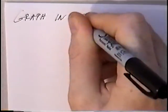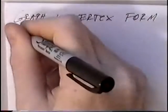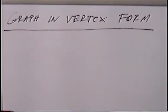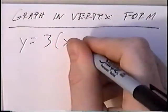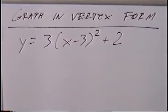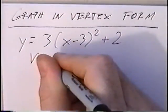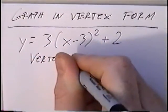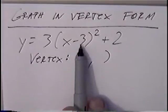The title of the first section is 'Graph in Vertex Form.' In this section we'll take equations in vertex form and graph the parabola. The first equation is y equals 3 times (x minus 3) squared plus 2. From this equation we can find the vertex.